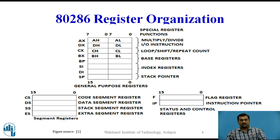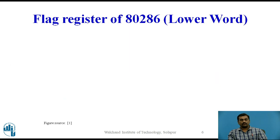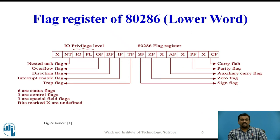The flag register of 80286 is a modified version of the 8086 flag register to accommodate various status and control operations involved in the 80286 due to multitasking and multi-user environment. The flag register consists of two words: upper word and lower word. The lower word is similar to the 8086 case with some additional flags. The upper word of the flag register is called the machine status word.